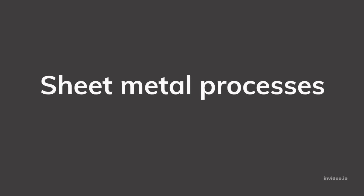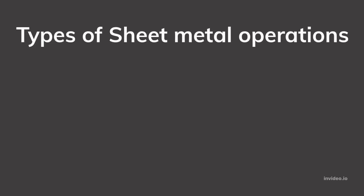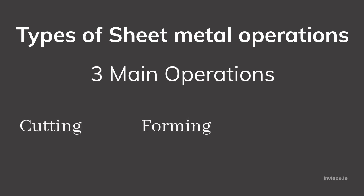Welcome to my another video on understanding the basics of sheet metal industry. In this video, we will look into the basic processes of sheet metal. Let's start with the basic operations of sheet metal. There are three basic operations involved in sheet metal industry: cutting, forming, and fabrication or assembly.